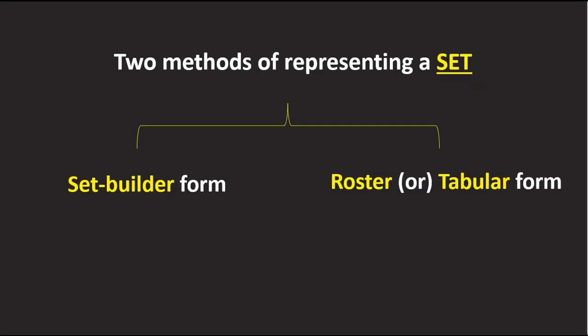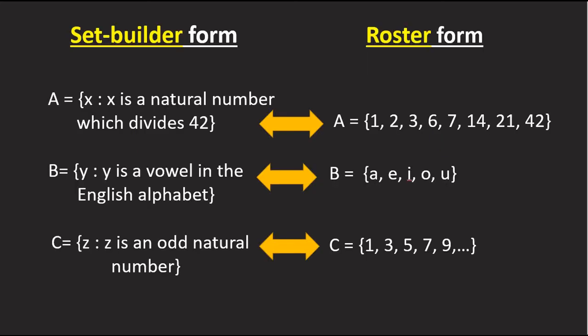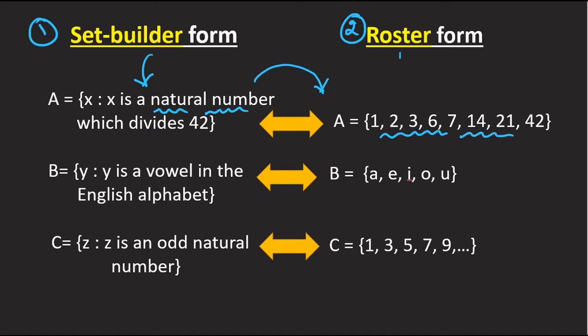First, the representation of a set. There are mainly two types. The first is set builder form and the second is roster form. The set builder form uses words to describe elements, and the roster form lists each element by name or number.